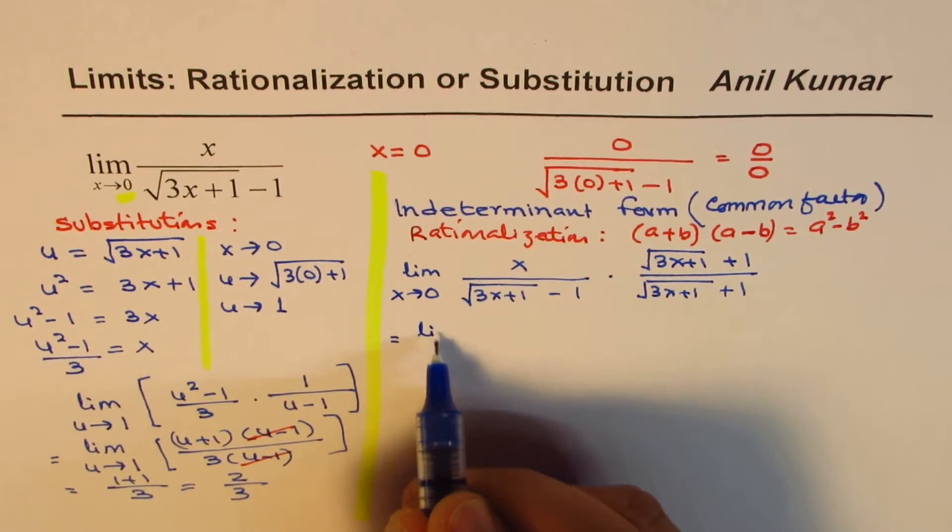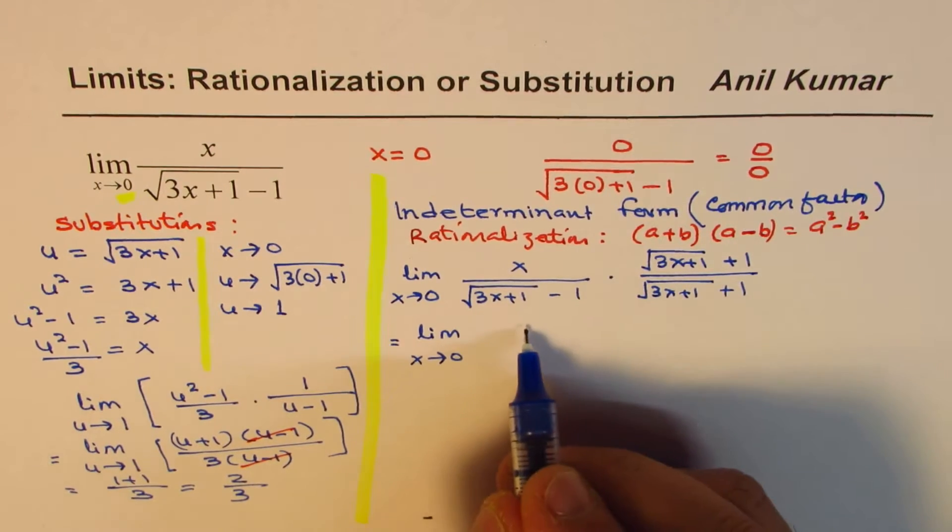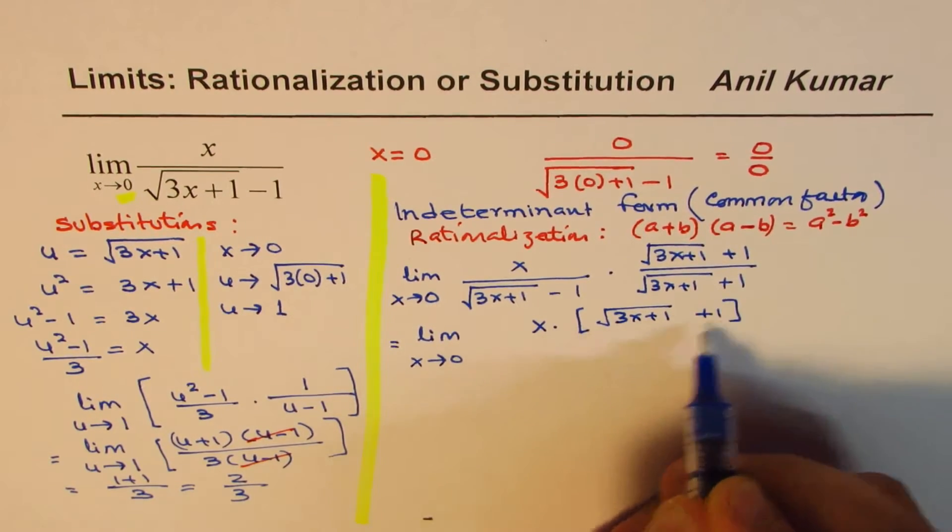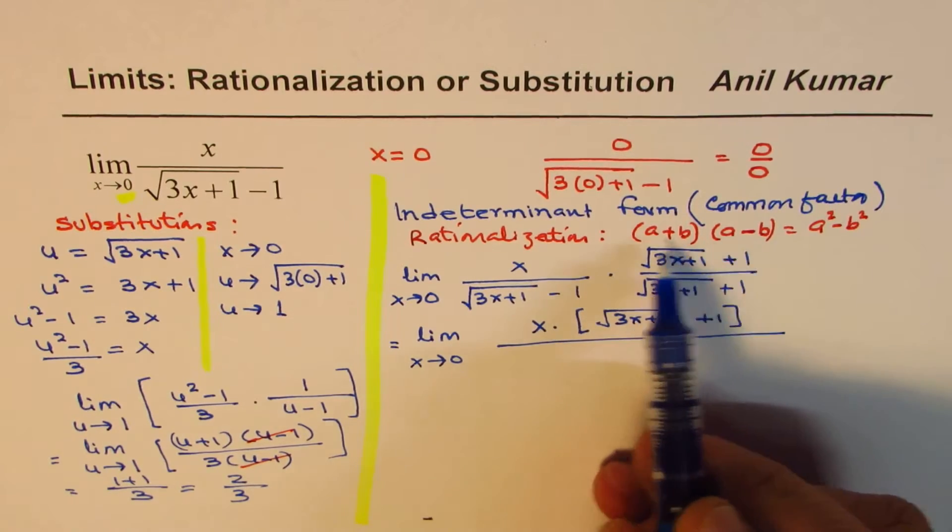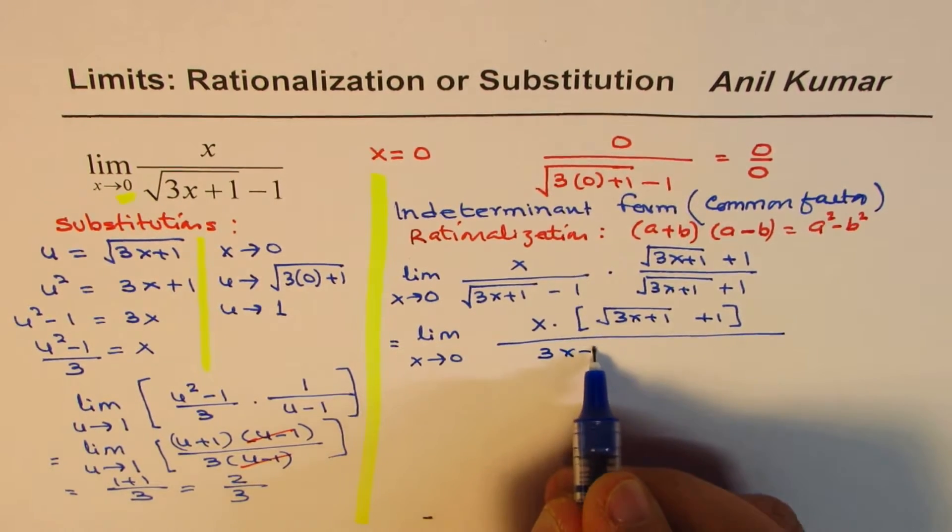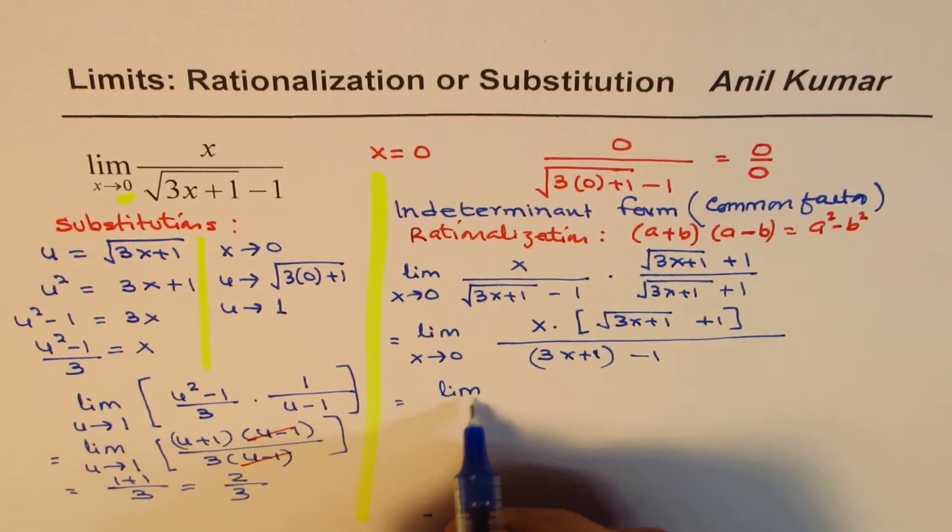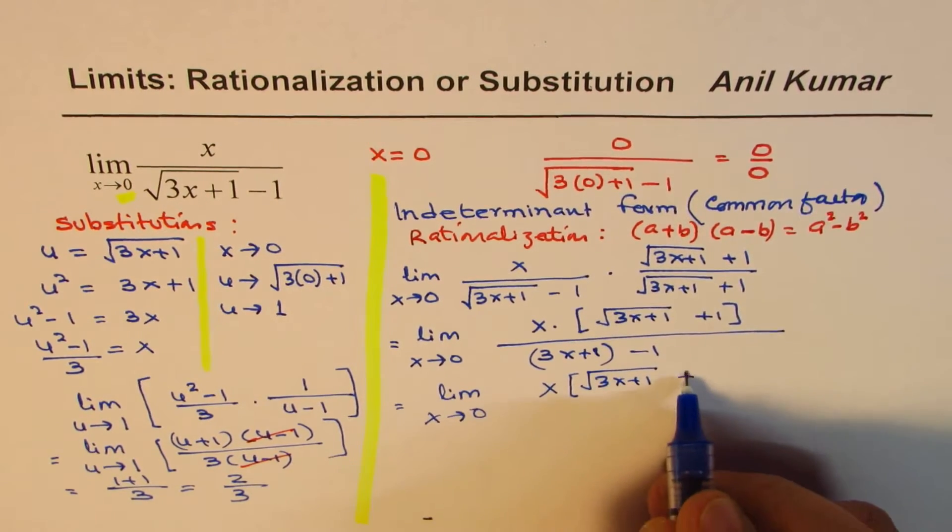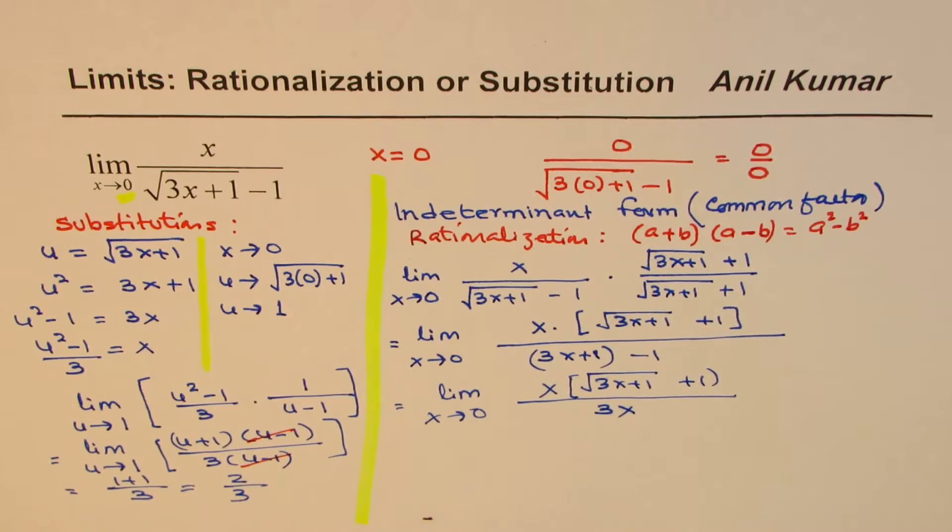So now this limit could be written as limit x approaches 0, numerator is x times this. So we rationalize denominator. So in the numerator we have x times within brackets square root of 3x plus 1 plus 1. And the denominator is this square minus that square. That's the beauty of this rationalization. So we get rid of the square root. So we get 3x plus 1 minus 1 squared which means 1. So now we could write this as limit x approaches 0. In the numerator we have x times square root of 3x plus 1 plus 1. And the denominator can be simplified. 1 minus 1 is 0, so we get 3x here. So now x is a common factor in the numerator and denominator. We cancel that off.